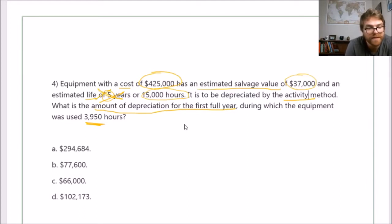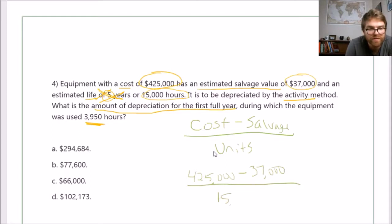Now we need to calculate it using a formula. It's very similar to straight-line—cost minus salvage value always in the numerator. But the denominator, now we're using the activity method, so it's actually going to be units under here. Our cost is $425,000, salvage is $37,000, and we're dividing it by the total number of hours.